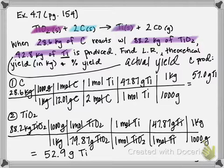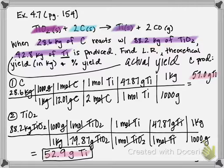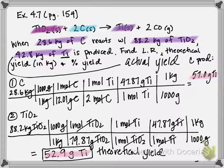Comparing the two results: carbon produces 57 kilograms of titanium, while titanium oxide produces 52.9 kilograms. The one that produces the smallest amount is the limiting reactant. The maximum amount of titanium we can produce before running out of material is 52.9 kilograms — that is our theoretical yield. Since titanium oxide produces the smaller amount, it is our limiting reactant in this problem.